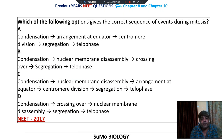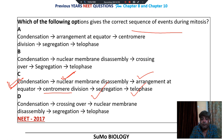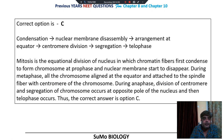Which of the following options gives the correct sequence of events? First, condensation of genetic material — chromosomes get formed. Then nuclear membrane gets disturbed and chromosomes scatter in the cytoplasm. After that, they get arranged at the equatorial plate. Then centromere division and segregation of chromatids towards opposite poles. Finally, telophase. Option number C is the right choice. Crossing over does not happen in mitosis — it happens in meiosis.